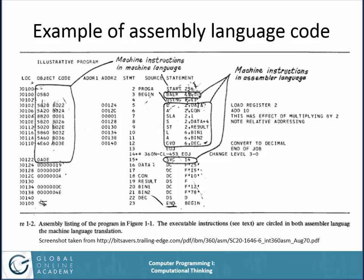Here's an example of some assembly language code from the IBM mainframe assembly language. Remember in Unit 1 you looked up the date for the IBM 360, which came out in 1964. This is programming like you might have done for that machine. There are statements here — I don't expect you to be able to write assembly language, but I want you to understand what I'm describing.